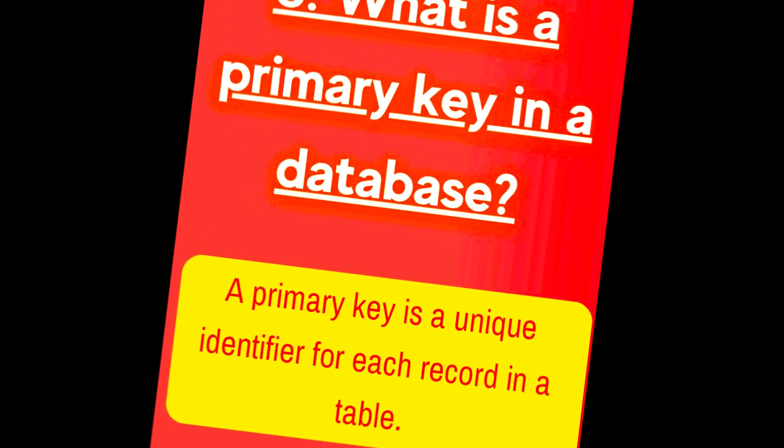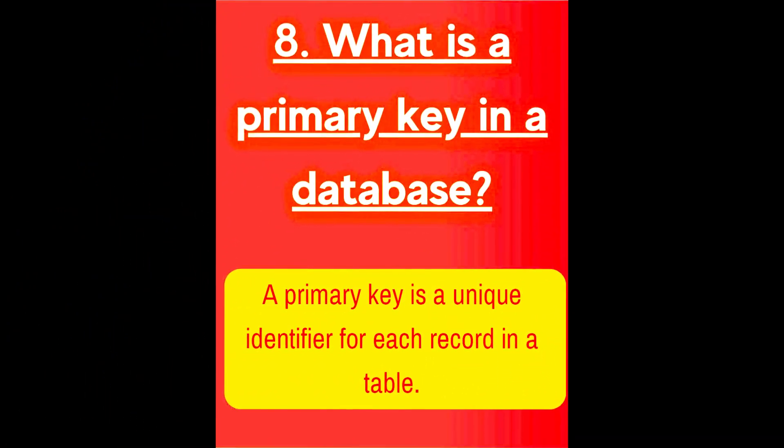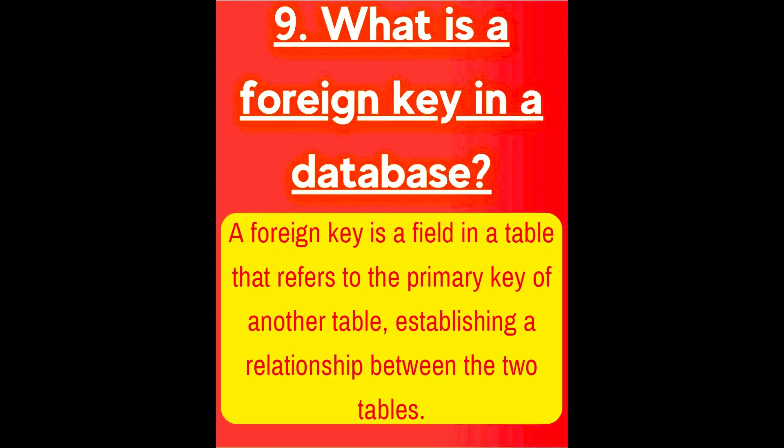Next question is, what is a primary key in a database? A primary key is a unique identifier for each record in a table. Next question is, what is a foreign key in a database? A foreign key is a field in a table that refers to the primary key of another table, establishing a relationship between the two tables.